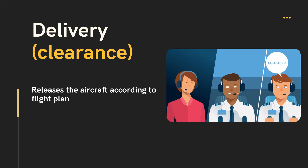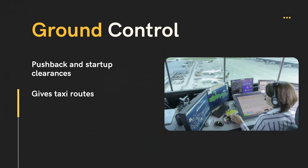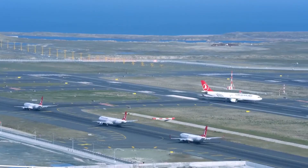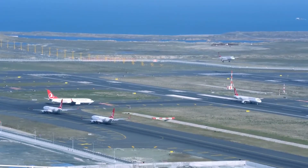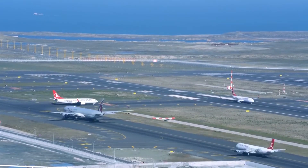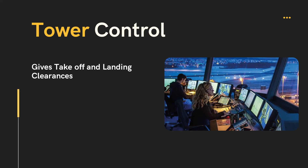Delivery or clearance units are generally located in more complex airports. In most smaller airports, the ground controller takes this role and does the same job. The next unit is ground. After delivery releases the aircraft, the ground controller takes responsibility. This unit is responsible for giving the aircraft pushback and startup clearance.